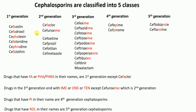Let me briefly discuss the mnemonics again. Drugs that have FA, PHA, or PHRA in their names are first generation cephalosporins, except Cephalochlor which is second generation. Drugs whose names have IME, ONE, or TEN belong to third generation cephalosporin class, except Cefuroxime which is second generation. Drugs with PI in their names are fourth generation cephalosporins — Cefepime and Cefpirome. Drugs with ROL in their names are fifth generation — Ceftobiprole and Ceftaroline. The rest belong to second generation cephalosporins.